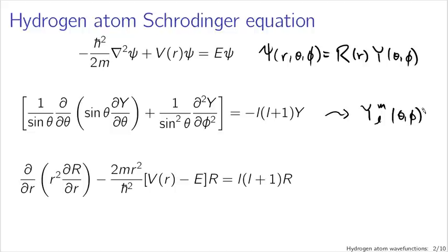For the radial equation, what we got after the separation of variables for capital R was slightly more complicated. We didn't just get simple Y_lm's that we could write down — Y_lm's being given in terms of a set of orthogonal polynomials and complex exponentials in phi. We end up with the same sort of solution for our radial equation, though the process is slightly more complicated.